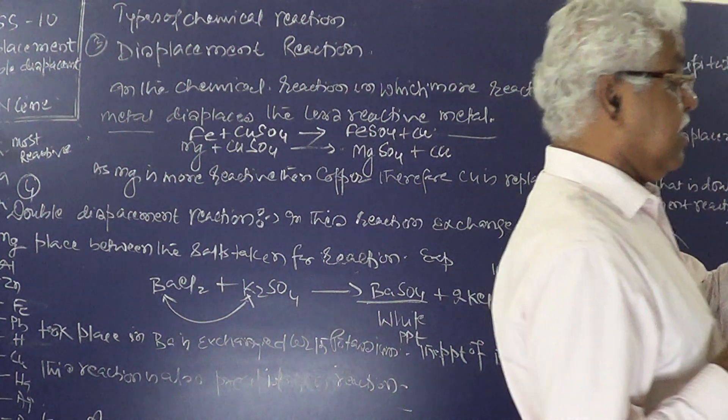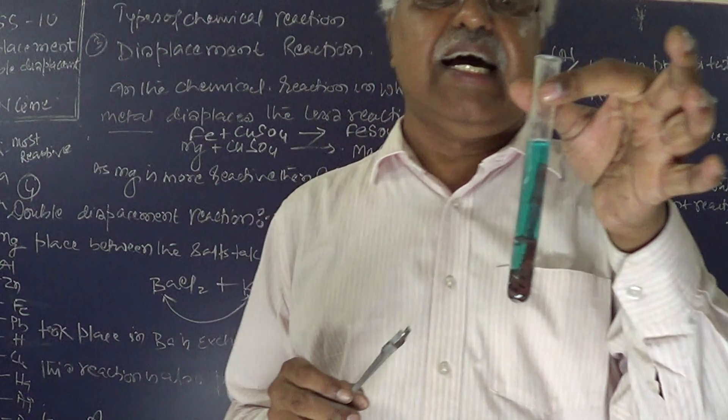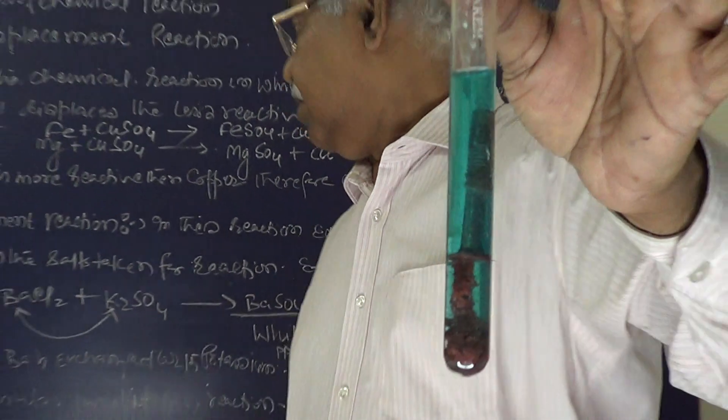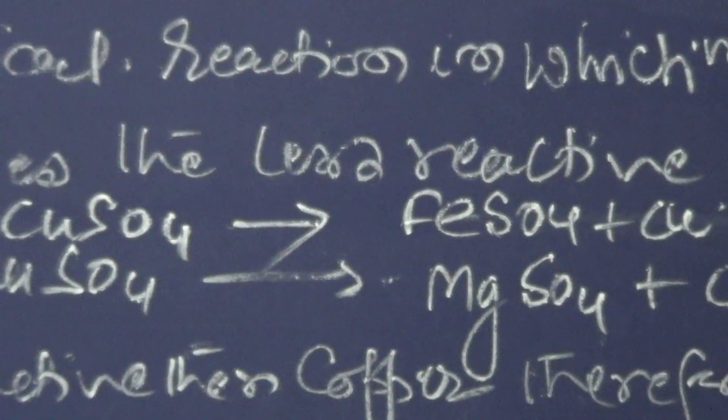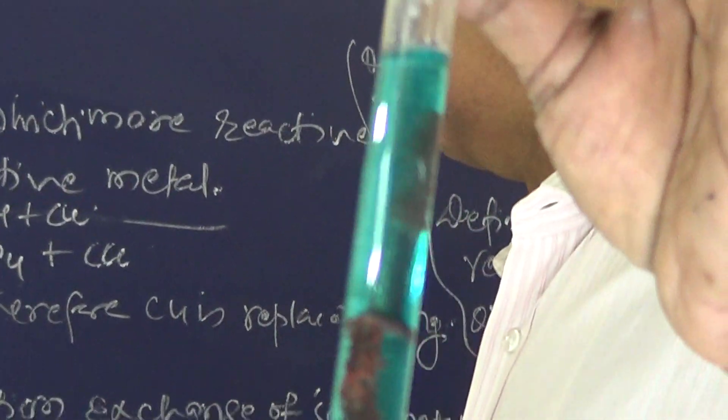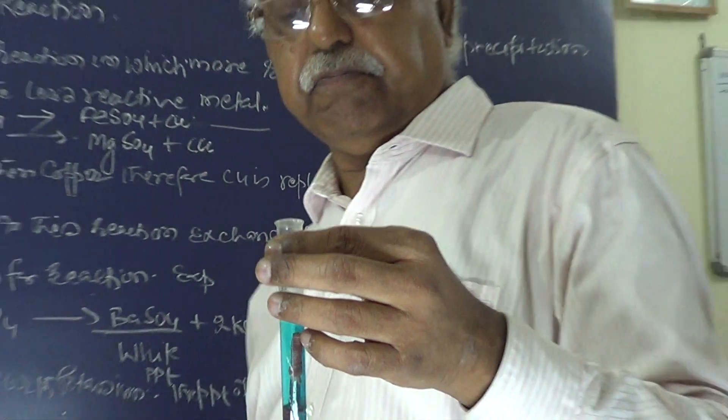And displacement reaction — one thing I told you about: iron reacts with copper sulfate, which is blue in color. Iron reacts with copper sulfate. The iron sulfate solution is formed, and copper is deposited. Now this is our solution — let's look at what has happened.